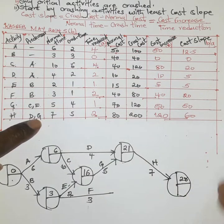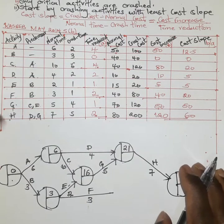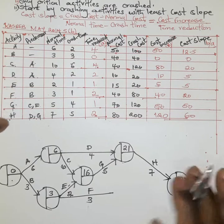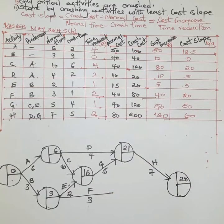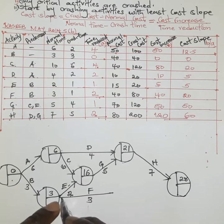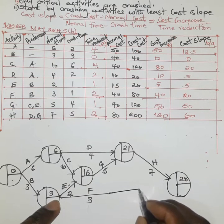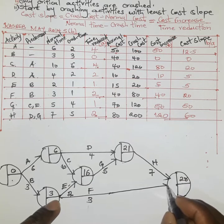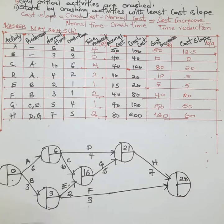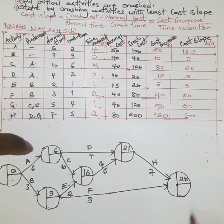An important rule is that there should be no danglers — activities without an ending node. Activity F is a dangler, so we connect it to the final terminal node. This completes the forward pass.